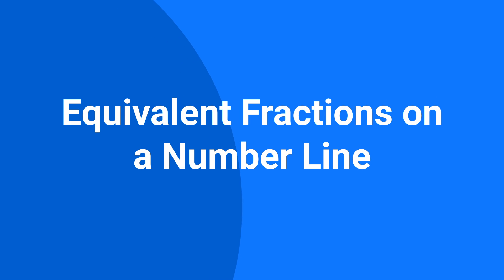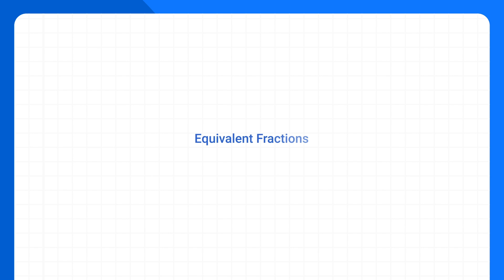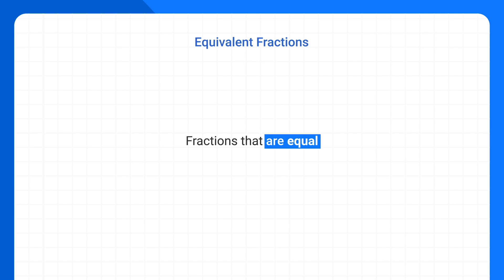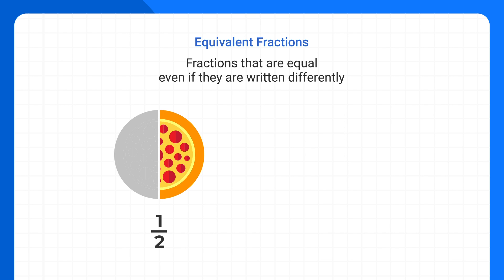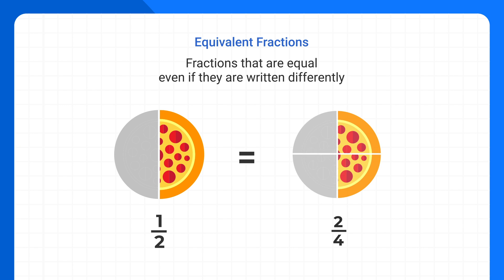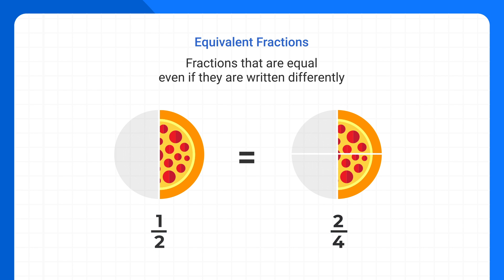Today we're going to learn how to identify equivalent fractions on a number line. First, remember that equivalent fractions are fractions that are equal, even if they might be written differently. For example, one half of a pizza is the same thing as two fourths of a pizza. Even though the fractions are written differently, they represent the same amount.